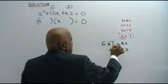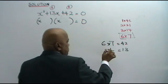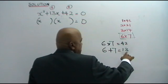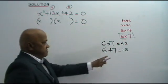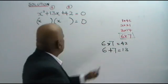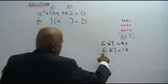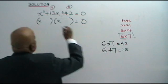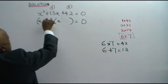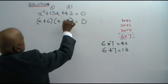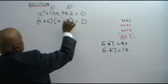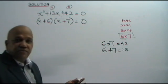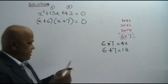From the list you can see very clearly the correct pair is 6 and 7. 6 times 7 is 42, and 6 plus 7 is 13. So the two numbers are positive 6 and positive 7. You just fill them in — very, very straightforward.